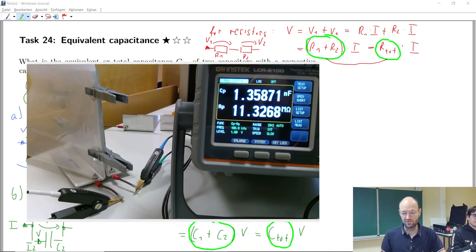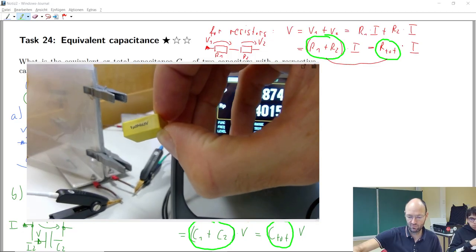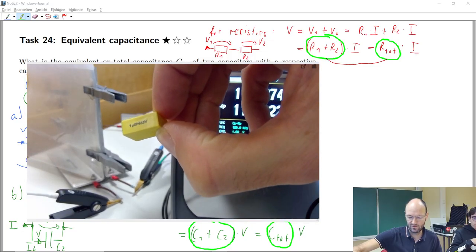And so I have some more resistors, some more capacitors. This is the yellow one that I have shown before.